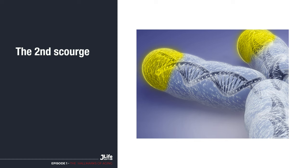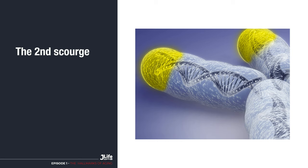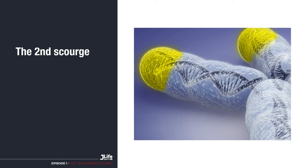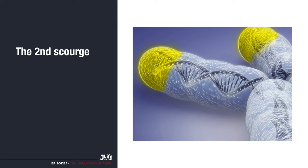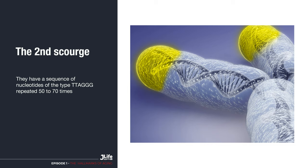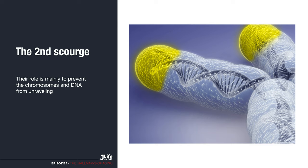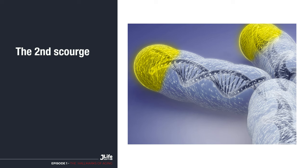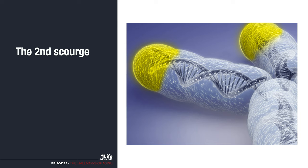The second scourge is the shortening of telomeres. You have probably heard of telomeres. They are part of the DNA, but are at the end of the strand and have no coding function. They have a sequence of nucleotides of the type TTAGGG, repeated 50 to 70 times. Their role is mainly to prevent the chromosome and DNA from unraveling. They are also responsible for preventing two DNAs from sticking together at the end, which can be very unfortunate.